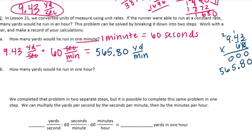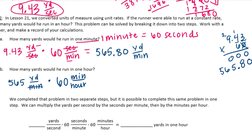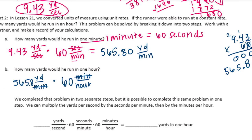Now, how many yards would be run in one hour? We take 565.80 yards per minute and multiply by 60 minutes per hour. The minutes cancel out, leaving yards per hour. I noticed I had forgotten the 80 hundredths, so let's correct that and multiply 565.80 by 60.